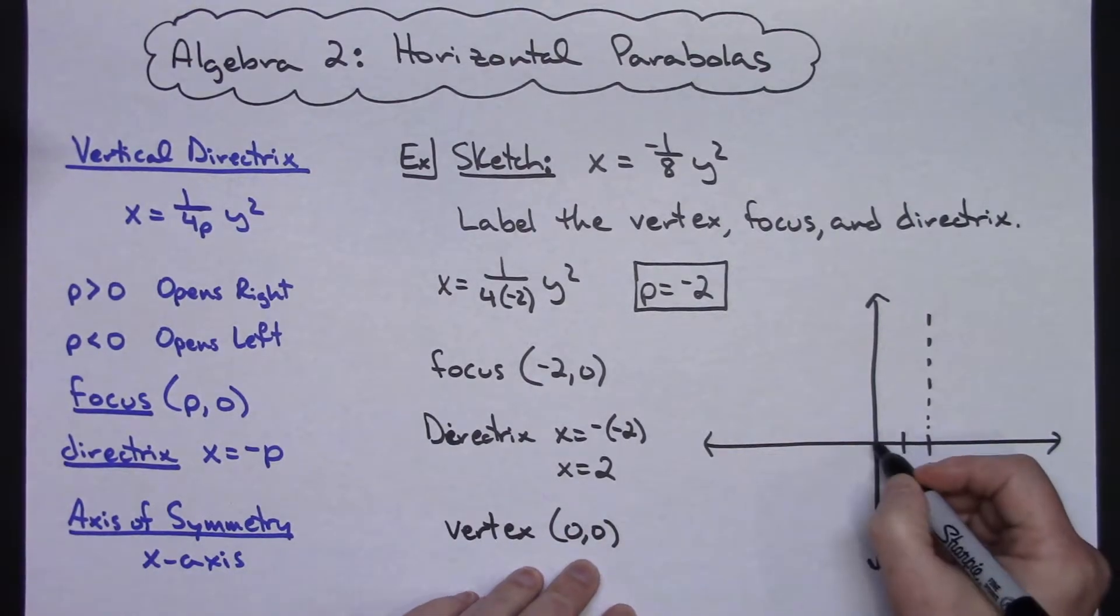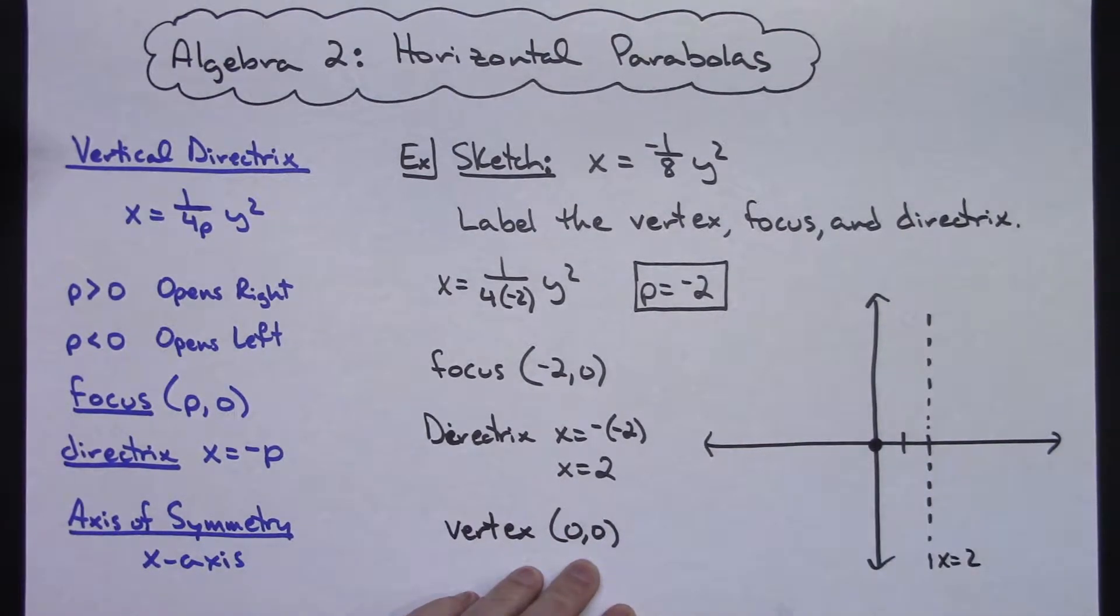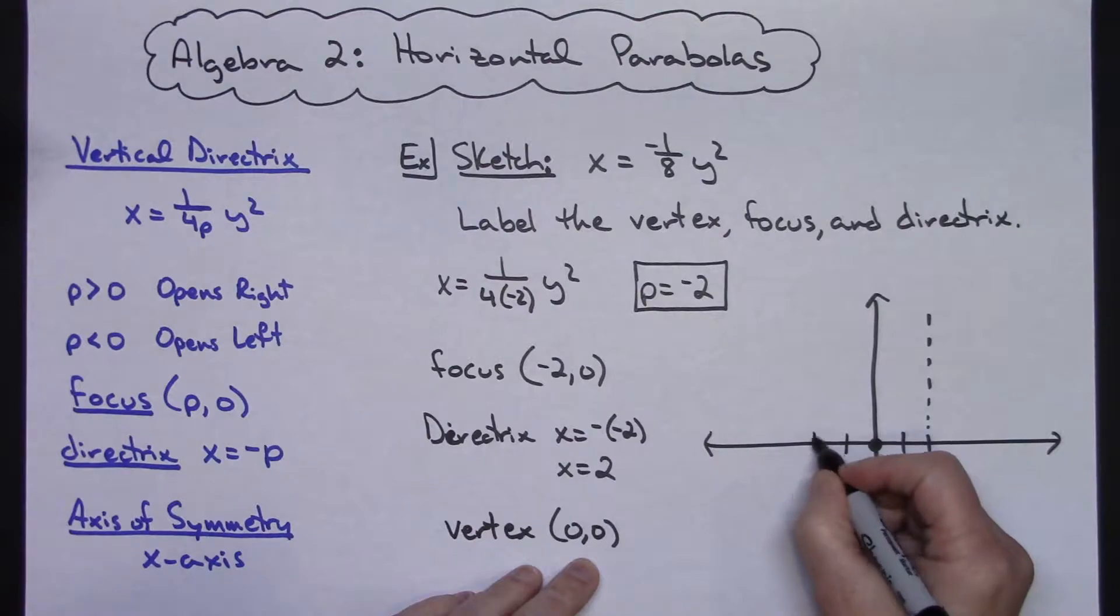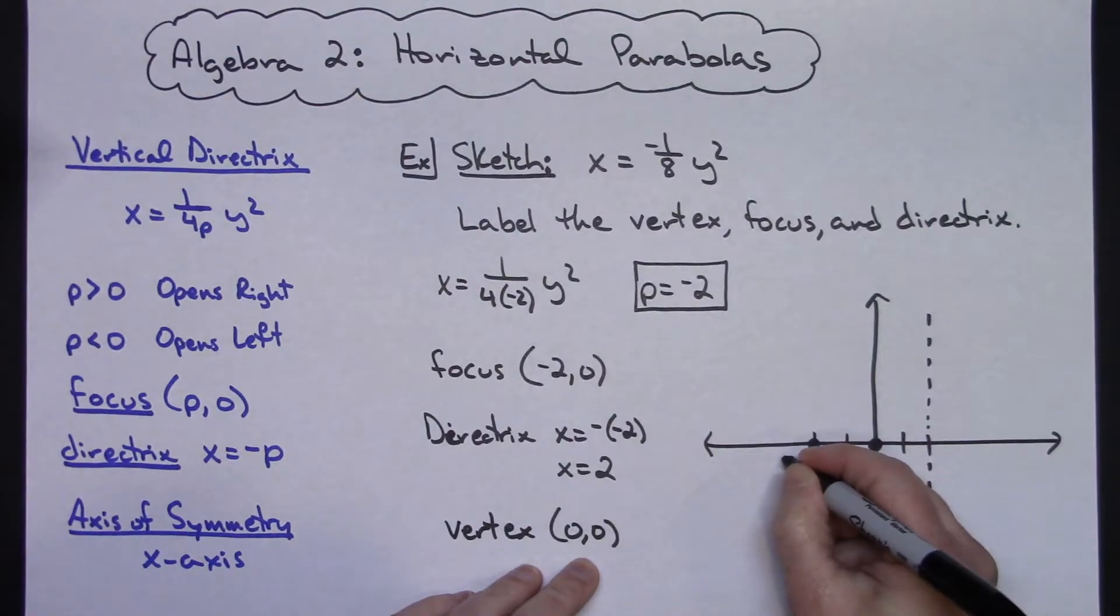I know my vertex is at 0, 0. And I know my focus is at negative 2, 0. We'll go ahead and put that on there.